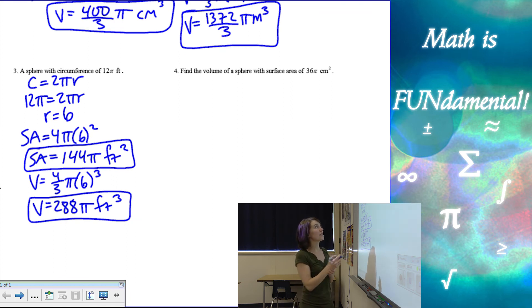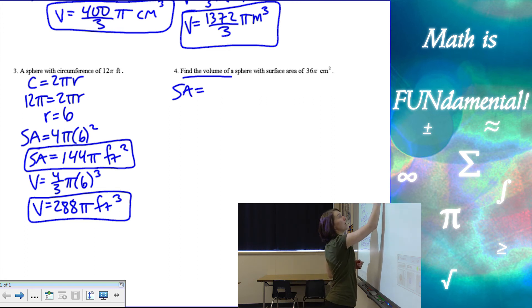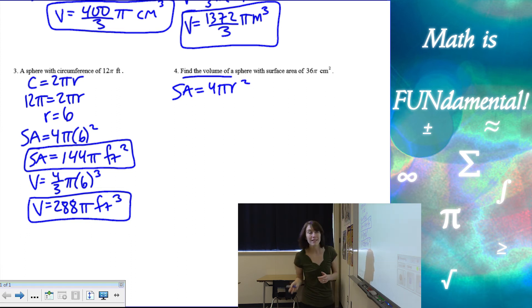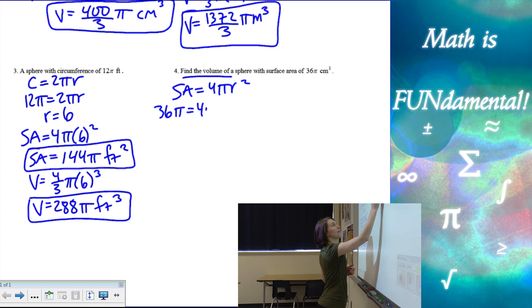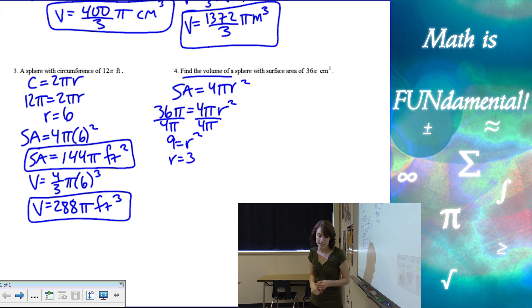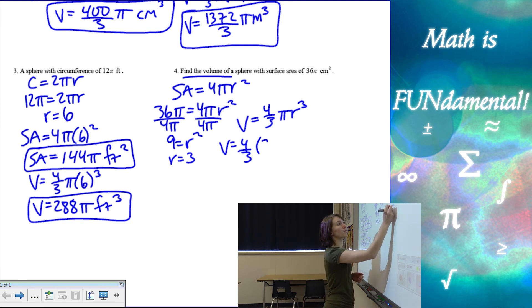Now, this one asks us to find the volume if we know that the surface area is 36 pi. So I know surface area is 4 pi r squared, and they give us that surface area is 36 pi. If I set this equal to 4 pi r squared, I can solve for the radius. If I divide by 4 pi, the pi's cancel out, and 9 is going to equal radius squared, which leaves me with the radius of 3. Now I can find the volume, which is 4 thirds pi r cubed. So 4 over 3 times 3 cubed times pi is going to be 36 pi centimeters cubed.